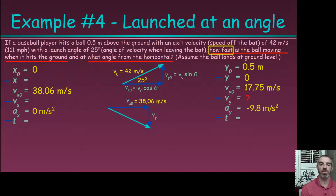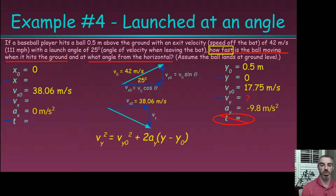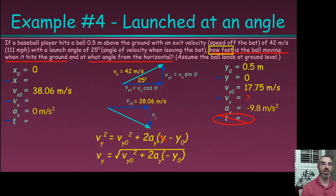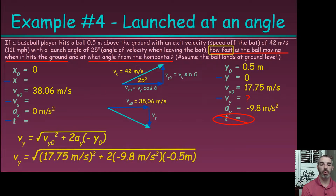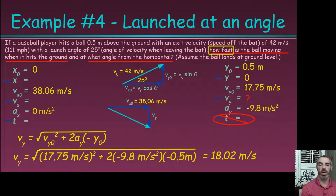Once we have both the x and y velocity components, we have two sides of a right triangle. We don't know time, so we use the third kinematic equation — the vy-squared equation. Crossing out what's zero, we take the square root of both sides and plug in our numbers. The units work out to meters per second, giving a final y-velocity of 18.02 meters per second. This is slightly faster than the initial y-velocity because the ball lands half a meter lower than it was launched.